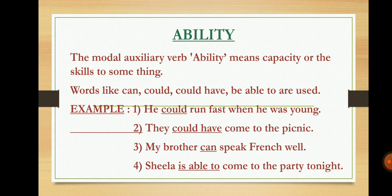In these sentences, the helping verbs — could, could have, can, is able to — are called modal auxiliary verbs, and the main verbs run, come, speak, come are in V1 form. For example, can we say 'He run fast when he was young'? No, we cannot. We need a helping verb. If we put the correct helping verb, then the sentence will be correct. This is what is called the modal auxiliary verb of ability.